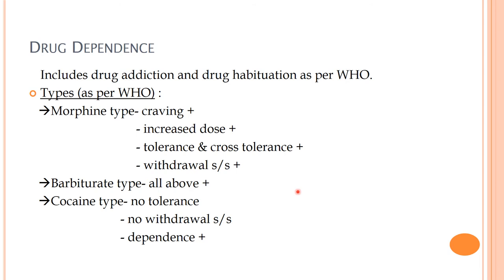Due to the tolerance effect in morphine-type dependency, the individual consumes a dose but doesn't feel sufficient effect, so he keeps increasing the dose. As tolerance increases, he returns to increasing the dosage again. If the substance is not available, there will be significant withdrawal symptoms — also referred to as 'abstinence syndrome,' which carries the same meaning. Key parameters to note are: craving, dose (whether increased or decreased), tolerance, and withdrawal signs and symptoms.